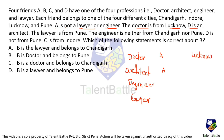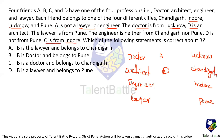D is an architect, so A must be a doctor. Since the doctor is from Lucknow, A is from Lucknow. The lawyer is from Pune. The engineer is neither from Chandigarh nor Pune, and since Lucknow is taken, the engineer must be from Indore. D is not from Pune, and with other cities assigned, D must be from Chandigarh. C is from Indore, so C is the engineer.